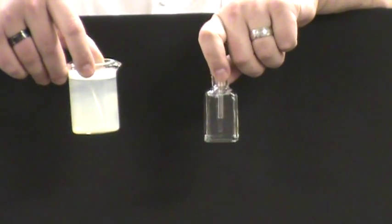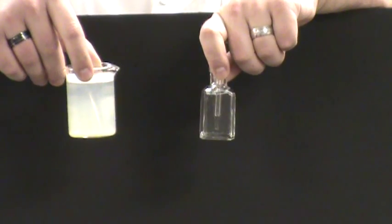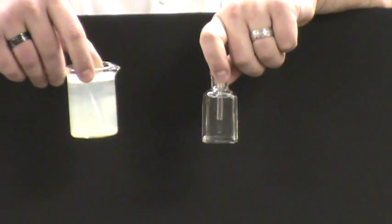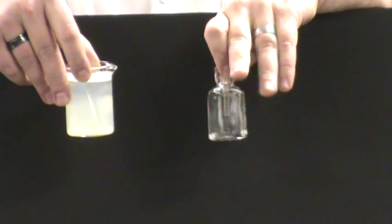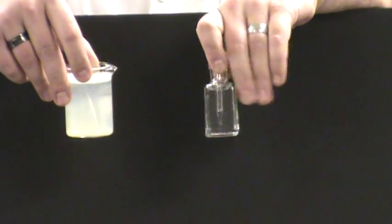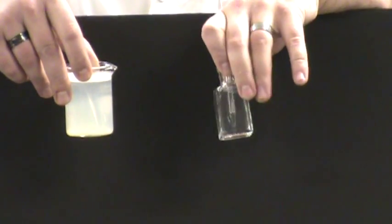When you're describing the color of a solution, you need to use color terms. This one is white. This one doesn't have any color. So this is a colorless solution.